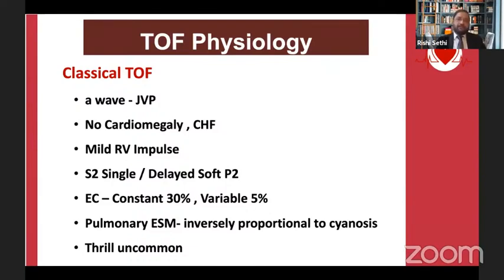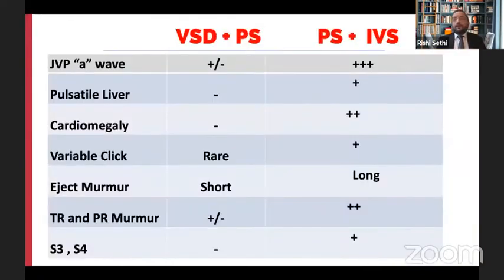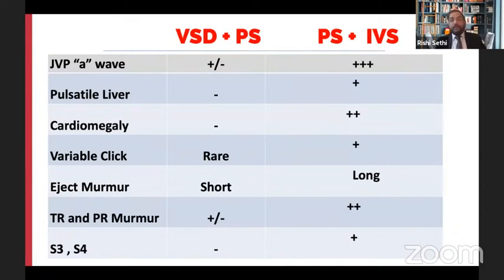To differentiate TOF from trilogy physiology: in trilogy with intact ventricular septum, there will be giant A-waves in JVP, cardiomegaly, and signs of heart failure. You can get a variable click of the pulmonary valve. The ejection systolic murmur would be much longer than classical TOF. Murmurs of pulmonary and tricuspid regurgitation will be heard. There would be S3 and S4, which are not classic findings in TOF. So trilogy physiology, due to intact ventricular septum, will have cardiomegaly, S3, S4, giant JVP, and a heart failure picture.